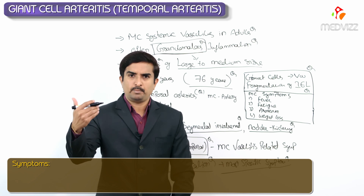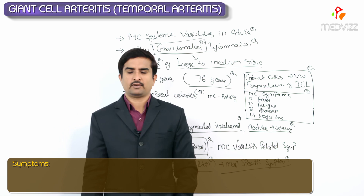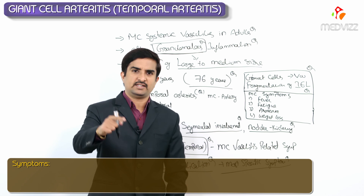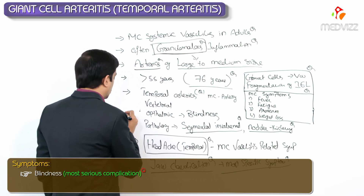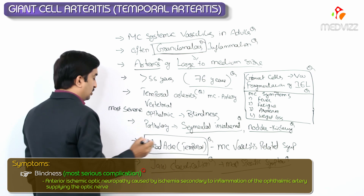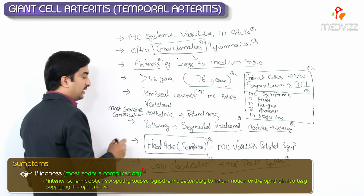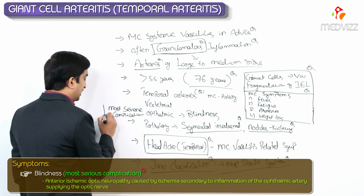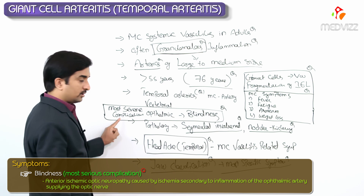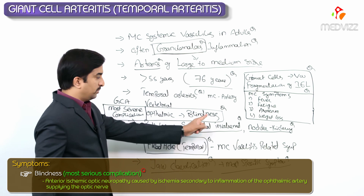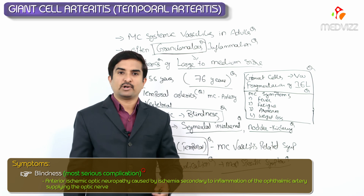The most serious complication of GCA is blindness, due to involvement of the ophthalmic artery and its branches. This is an important exam question: most severe complication of Giant Cell Arteritis = blindness, caused by ophthalmic artery involvement.